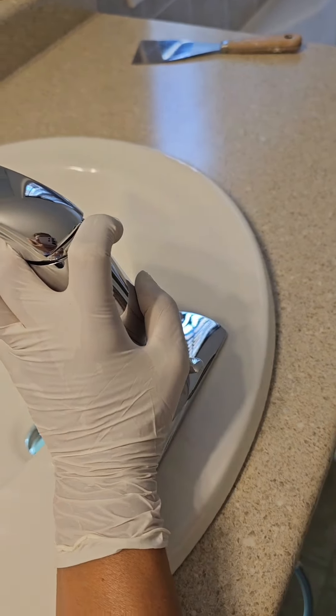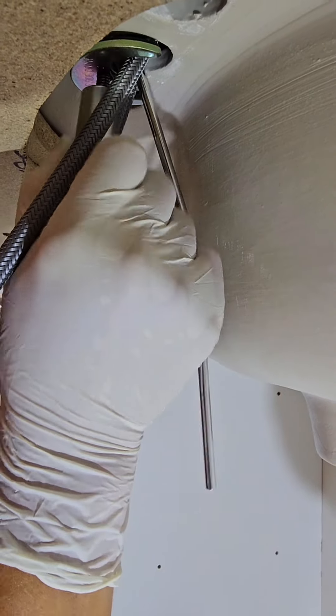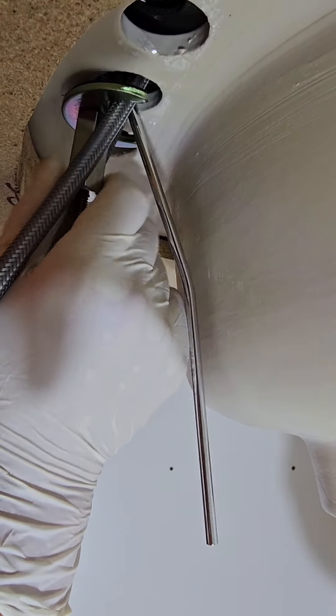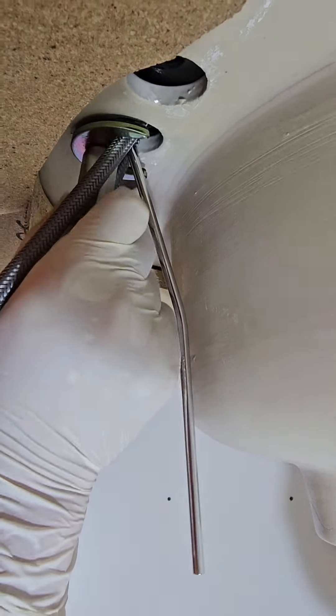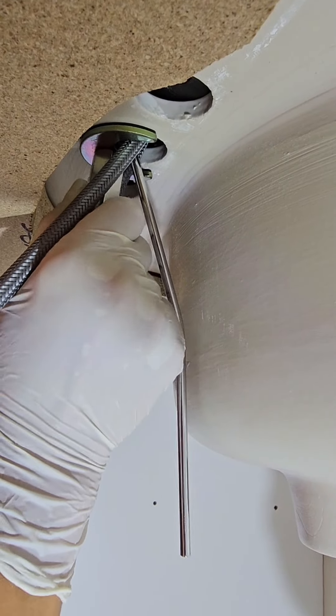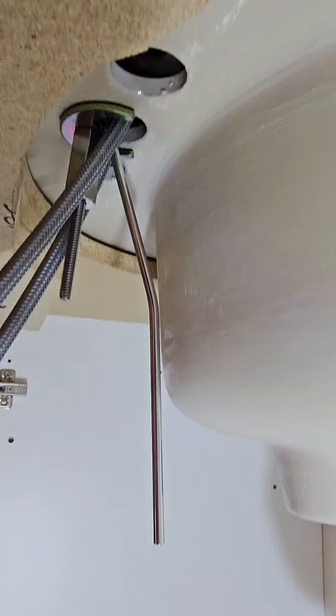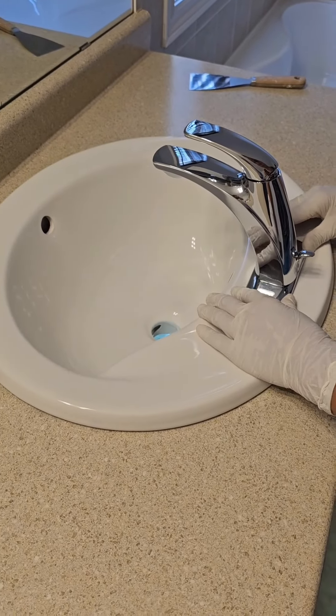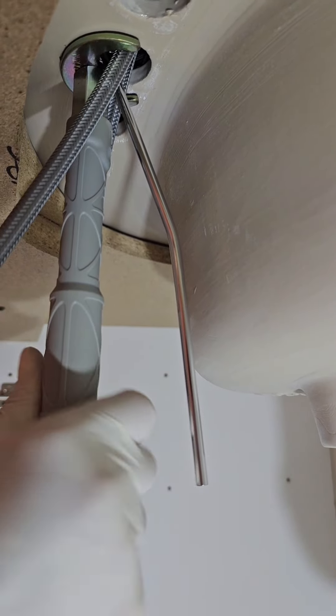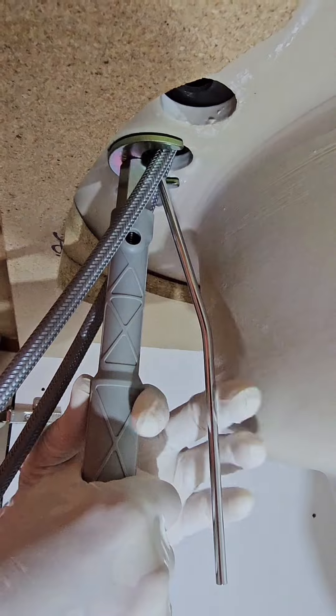Now it's time to put the lift rod in place. Ideally, it's best to hand tighten the knot. This prevents it from snapping. I carefully used the tool that came with the faucet to make sure it's secure.